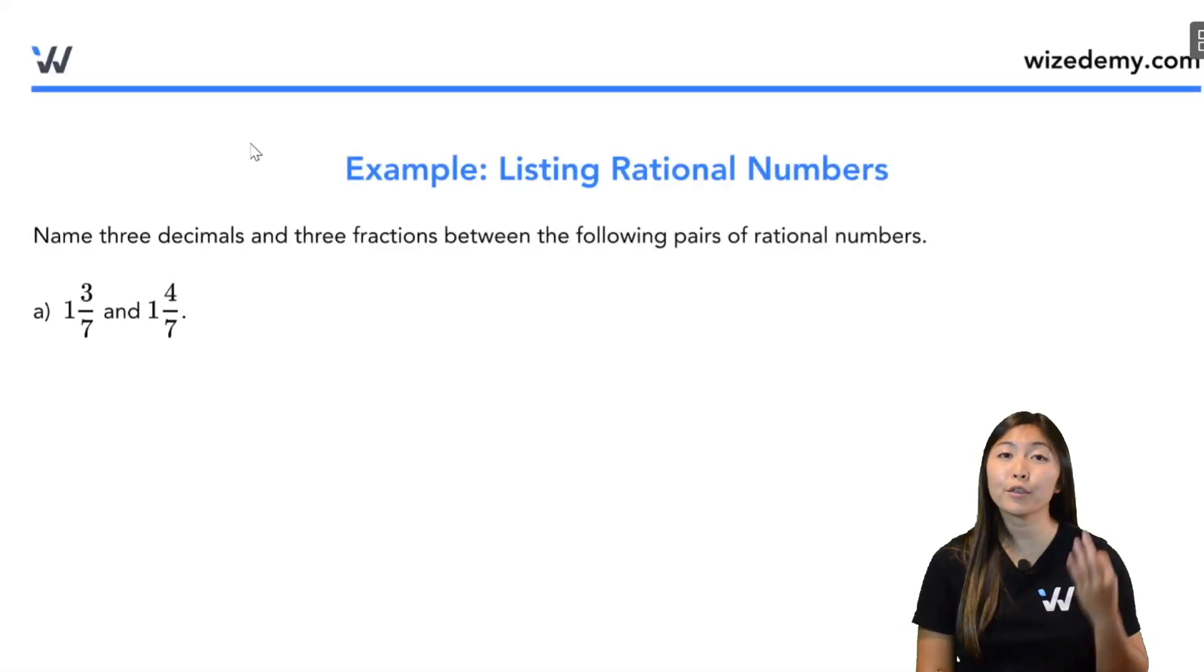In this example, we want to name three decimals and three fractions between these two rational numbers. Let's start with the decimals. That's usually a little easier.